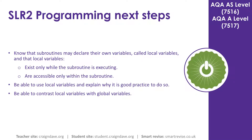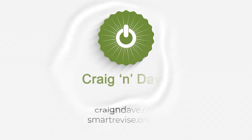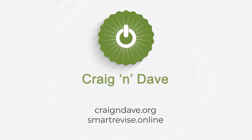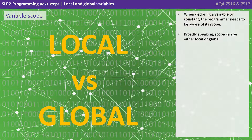In this video on programming next steps, we look at local and global variables. When declaring a variable or constant, the programmer needs to be aware of its scope. Broadly speaking, scope can be either local or global.